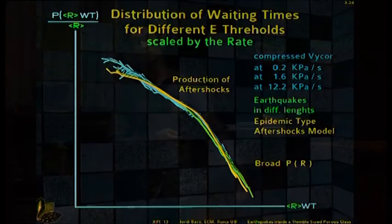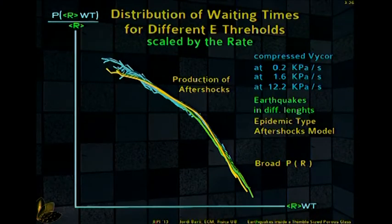And that is also predicted for the epidemic type aftershock model, that is a mean field model. It doesn't reproduce the microscopical scale, but it's considering the existence of aftershocks. And for this, we know that this slope up here is caused by aftershocks, and the other one is caused by the broad distribution of the activity rate.